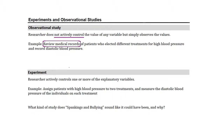In an experiment, the researcher actively controls one or more of the explanatory variables. Most studies in this course have just one explanatory variable, so we say the researcher actively controls the explanatory variable. In an example, that might look like assigning patients with high blood pressure to two treatments — as opposed to the patients electing their own treatment as in the first example.